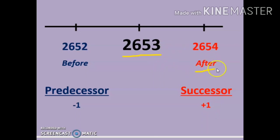So predecessor refers to the number before and successor refers to the number after. Here we are given the number 2653, so take the last two digits here.